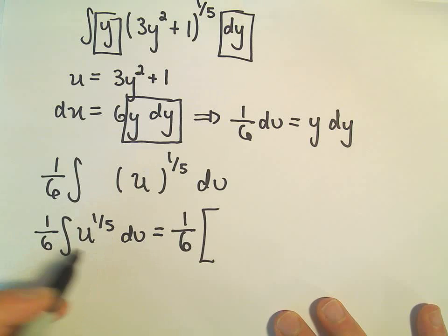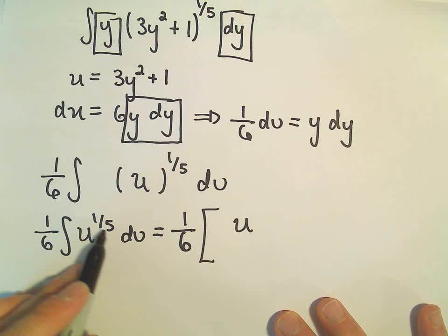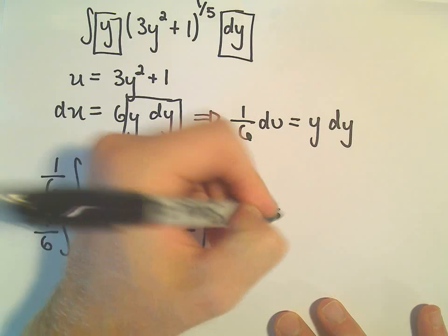So we'll be a little careful with our exponents. So now we're adding 1. So we're adding 5 over 5. Well, 1 over 5 plus 5 over 5 would give us 6 over 5. And then we divide by 6 over 5, that new exponent.